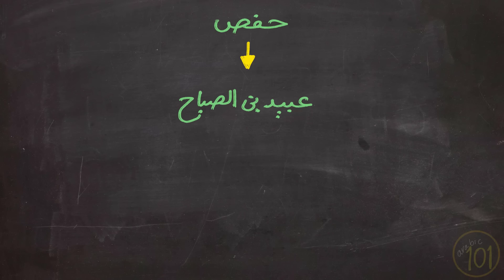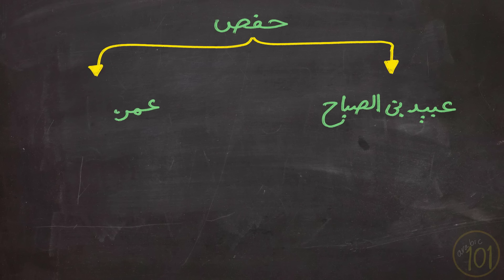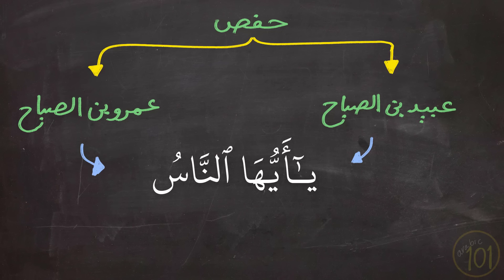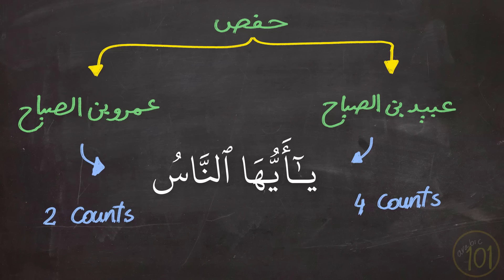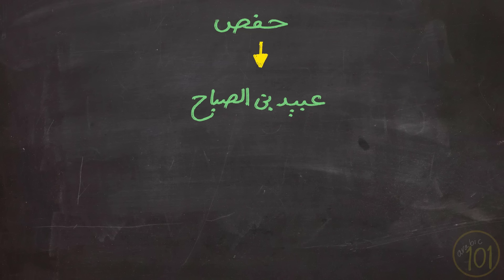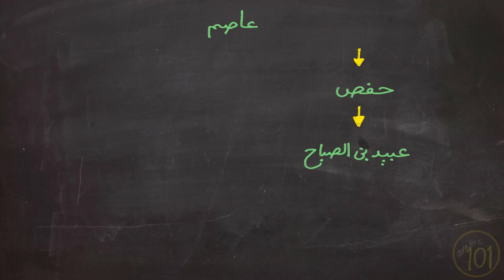And then within the riwaya, we get some tajweed differences between the turuq, like elongating Madh Munfassil for four counts or for two counts. So they are majorly minute tajweed differences.